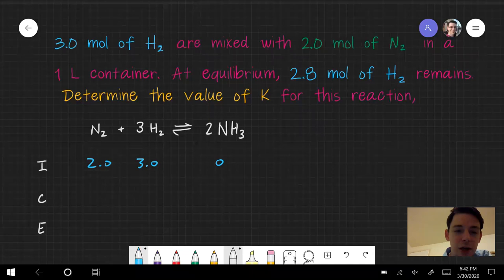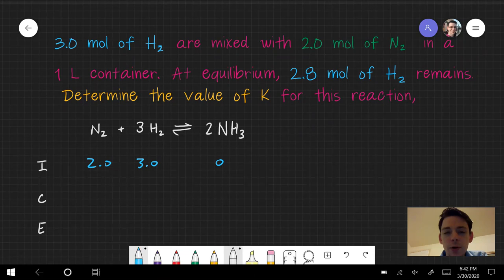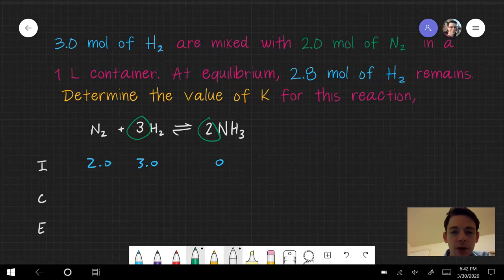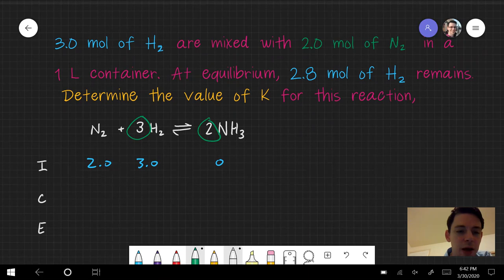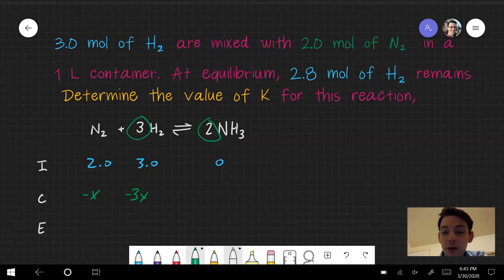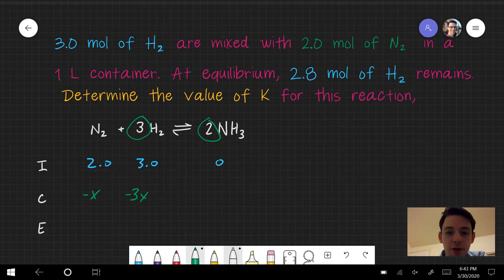At equilibrium, or our change, this one's going to be a little bit different. We don't have a one to one to one ratio anymore. We have a one to three to two ratio. So it's going to affect our change row. For every x N2 I consume, I consume three times as much H2. That is, I consume 3x H2. And for every one mole of N2 I consume, I produce two moles of ammonia. So for every x N2 I consume, I produce 2x NH3.